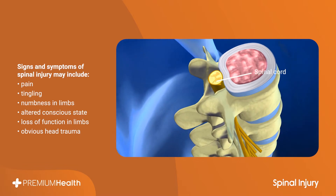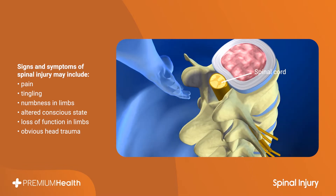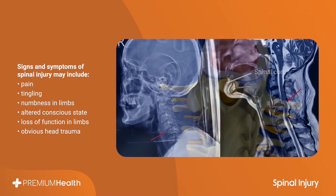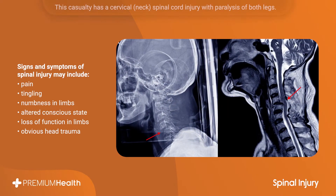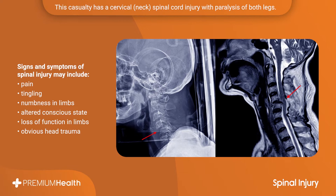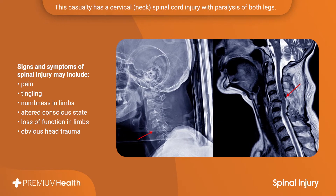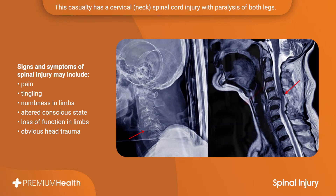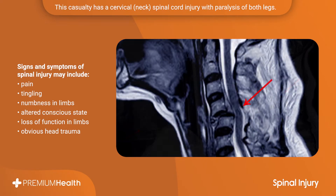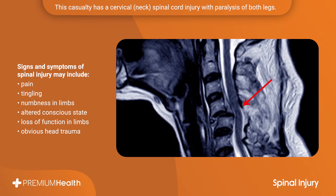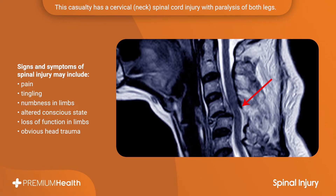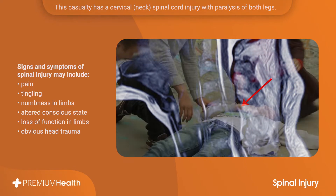Signs and symptoms of a spinal injury may include pain, tingling or numbness in the limbs below the injury. The casualty may experience an altered conscious state, loss of function in limbs, or obvious head trauma.